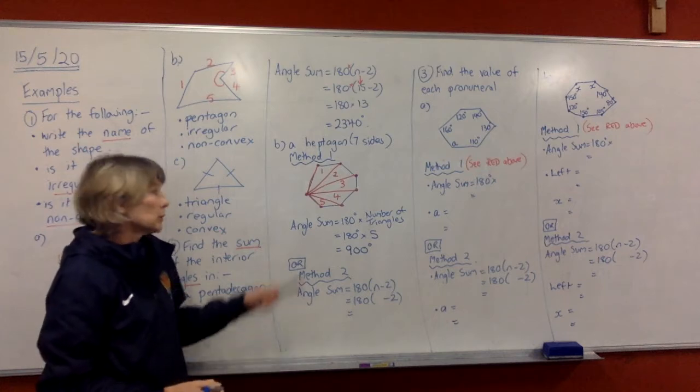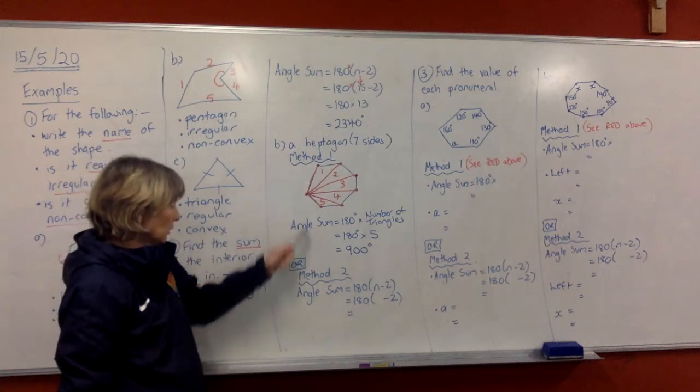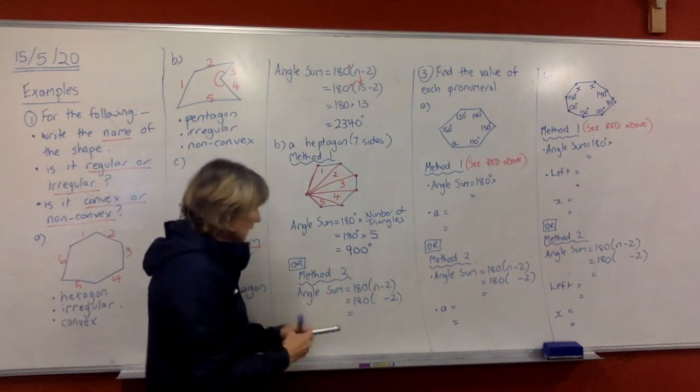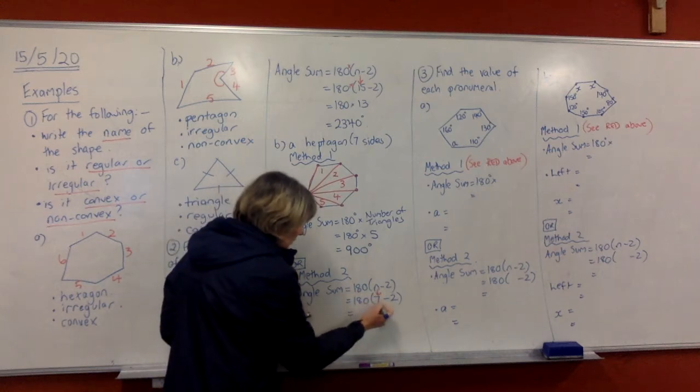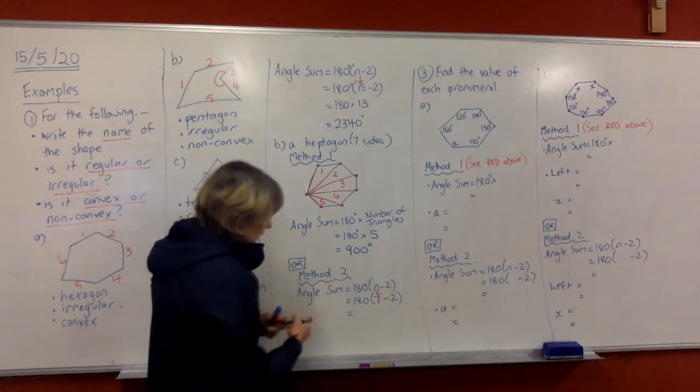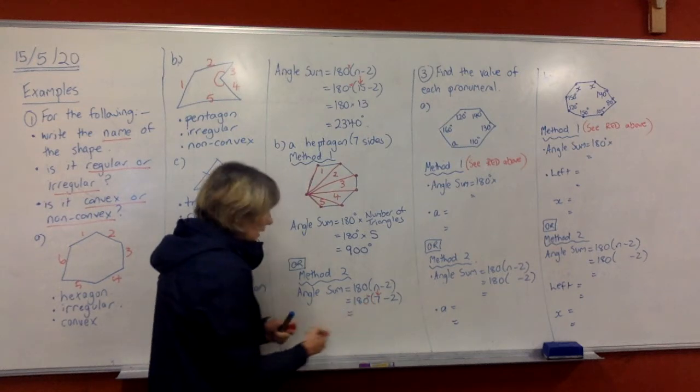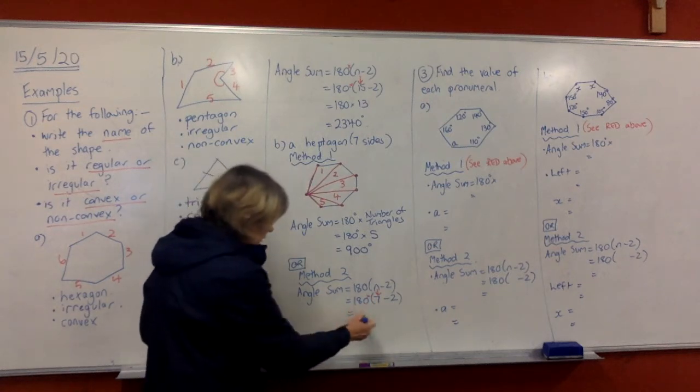If you wanted to, you could do this question with method 2. Just use your formula. You need to place N at the end. Put the 7. Now you can put that straight on your calculator, just like that if you want, and it will give you the same answer of 900 degrees.